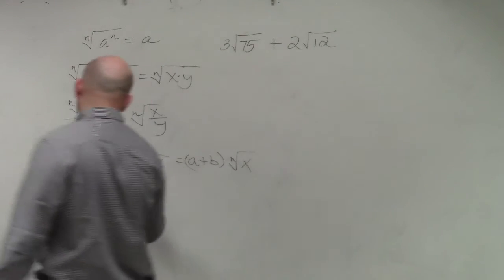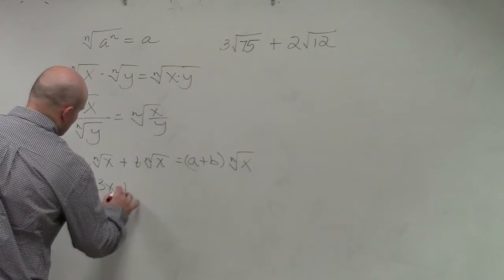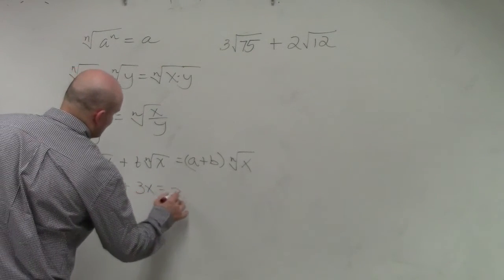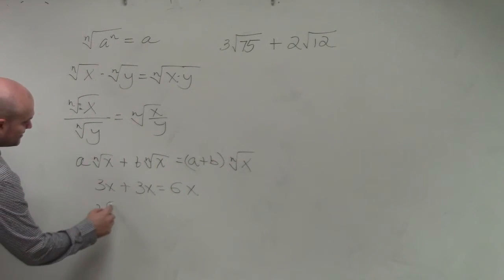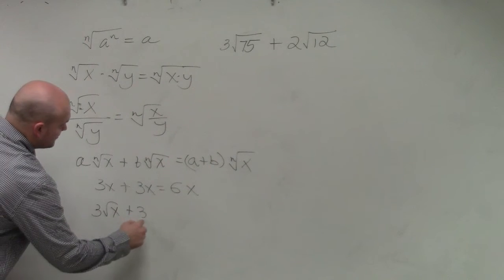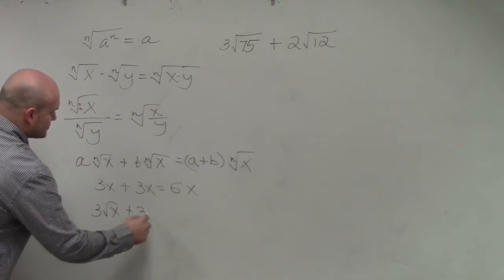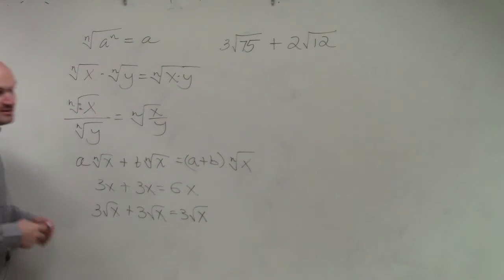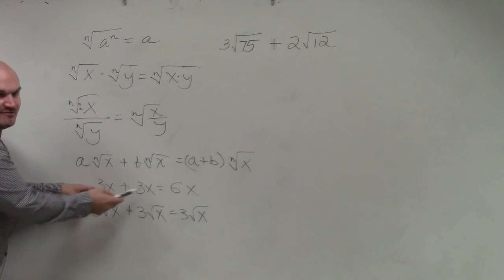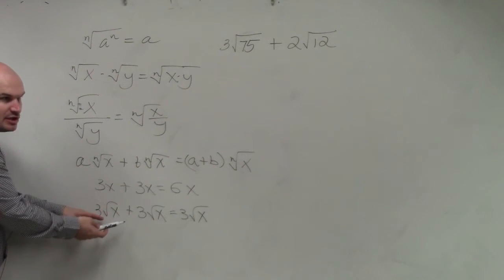So it would just be like, if I had 3x plus 3x, that equals 6x. If I had 3 square root of x plus 3 square root of x, that equals 6 square root of x. Does everybody see? Agree with me? So it's no difference. What you guys have done with adding variables, now we're just including the radicands.